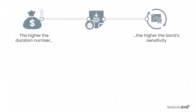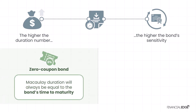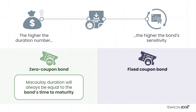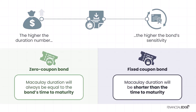This measure takes into account both the bond's time to maturity and its coupon level. Here are a few useful rules of thumb. For a zero coupon bond, the Macaulay duration will always be equal to the bond's time to maturity, as there is only one cash flow which occurs at maturity. For fixed coupon bonds with a coupon greater than zero percent, the Macaulay duration will be shorter than the time to maturity, because a portion of the bond is repaid before maturity through coupon payments.